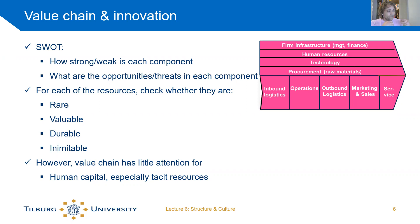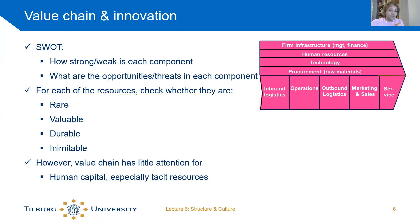Another drawback is that there is relatively little attention to human capital. Especially if your organization relies heavily on the knowledge of the people who work in it — like video game developers, consultants, or marketing organizations — the value chain doesn't capture that well. Those organizations really rely on human capital rather than on operations and raw materials, and this model gives relatively little attention to that.